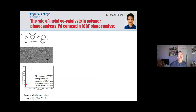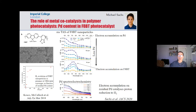It was clear that you needed the metal, and of course the metal here comes from the synthesis — in those reactions which Martin talked about earlier — so if you take out the residual catalyst from the synthesis, then F8BT no longer works.